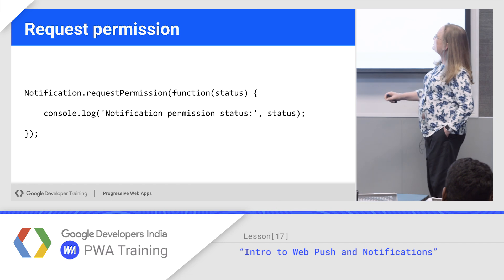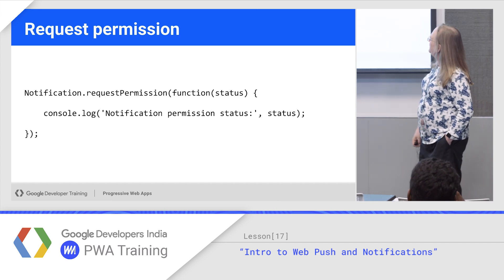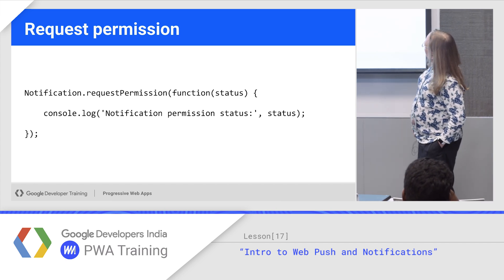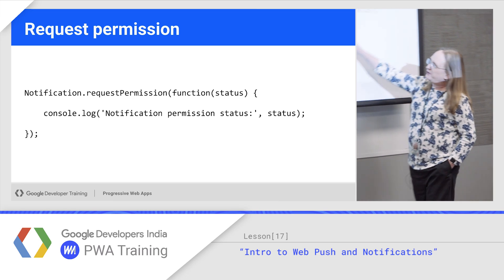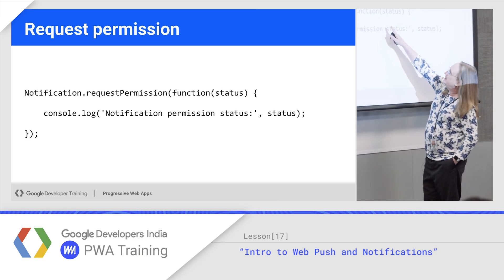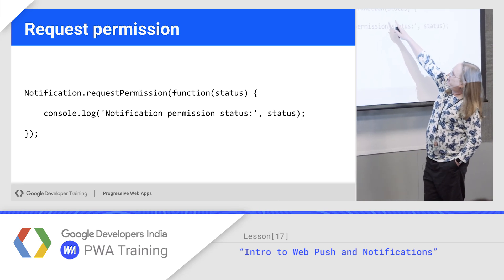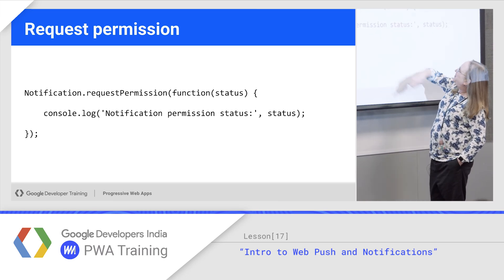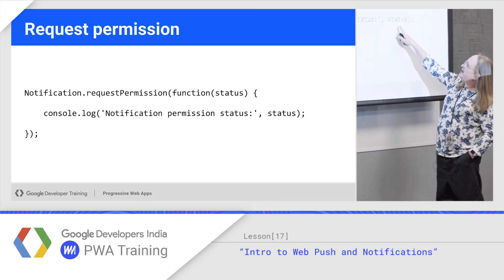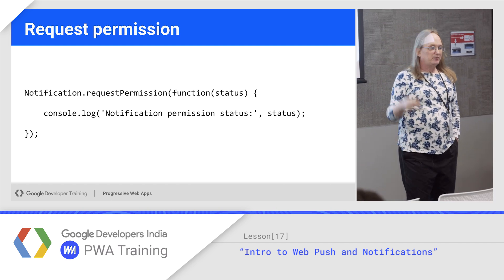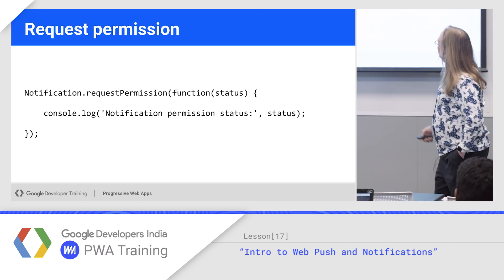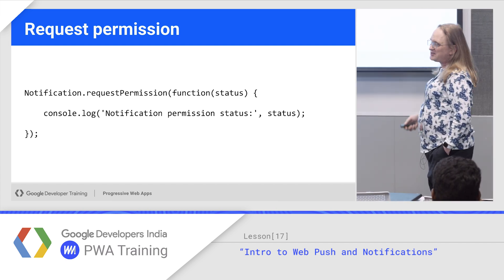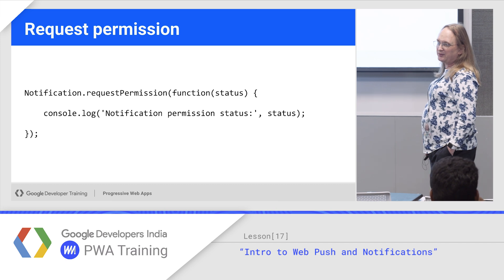The notification API starts with requesting a permission. You call requestPermission and it takes a function callback that calls you back with the status. The status is usually 'granted' or 'denied' — those are short strings.